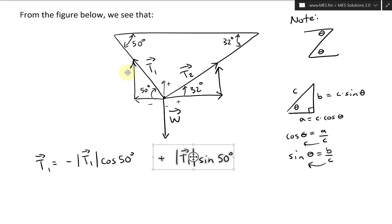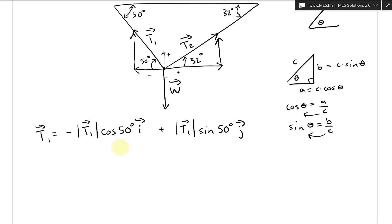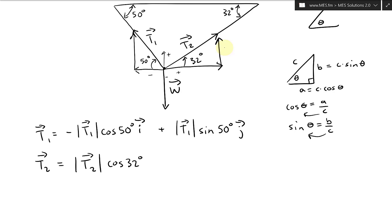We need to include the standard basis vectors i and j; otherwise, the expression is just scalars being summed. T2's component parts are both positive: T2 equals |T2| cosine 32° i-hat plus |T2| sine 32° j-hat.